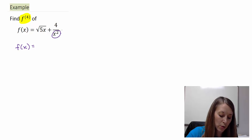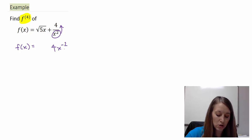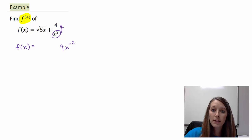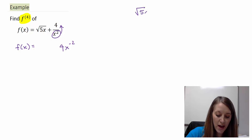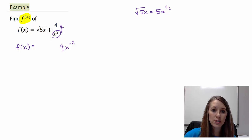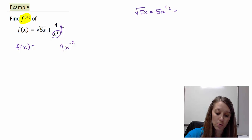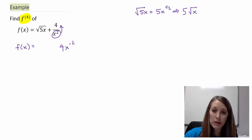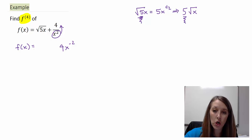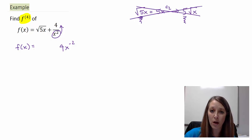I can move the x squared upstairs, so it gives me plus 4x to the negative 2. Now, what about the square root of 5x? What most students do incorrectly is take the square root of 5x and write it as 5x to the one-half power. That looks good, but if you were to reverse it, this would actually be 5 times the square root of x — so the 5 is outside the root, which is not the correct notation.